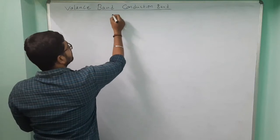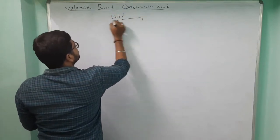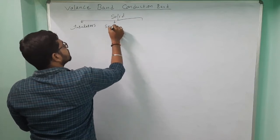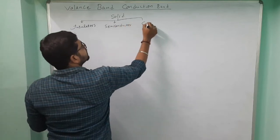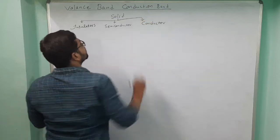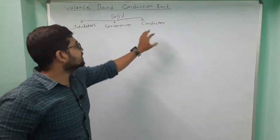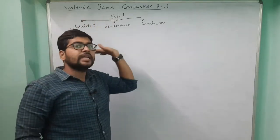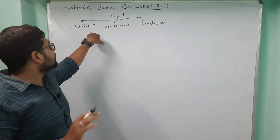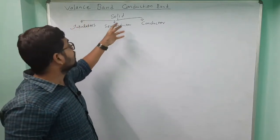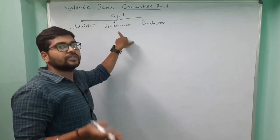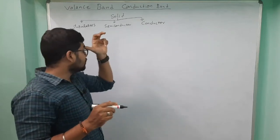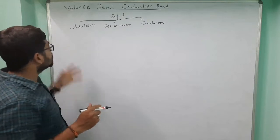First, let us understand materials. Solids have three states: insulator, semiconductor, and conductor. Insulator means the solid which will not allow electricity to pass through it. Semiconductor is in between — we cannot say it is a total insulator or a total conductor. Conductor means the material which will allow electricity to pass through it.